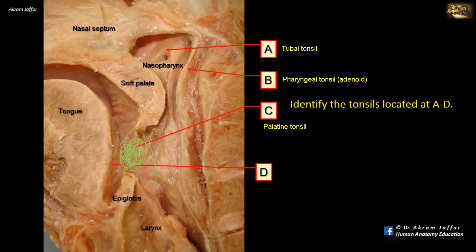The other group of lymphoid nodules are located on the dorsum of the tongue beneath the mucosa, giving the mucosa a cobblestone appearance on the posterior third of the tongue, and therefore it is called the lingual tonsil.